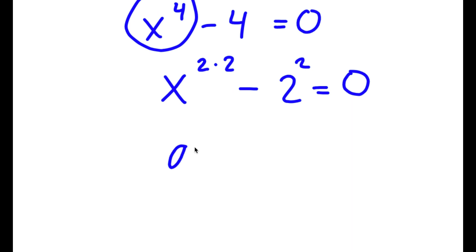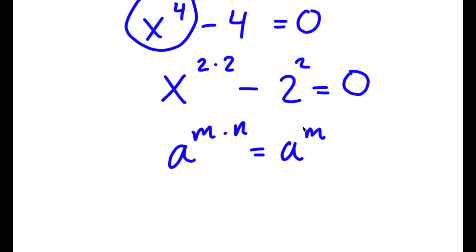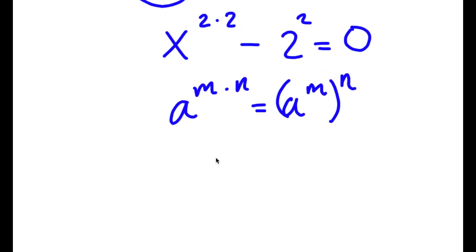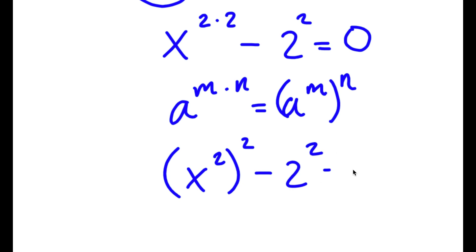Now if I have something in the form a to the power of m times n, this is the same thing as a to the power of m all to the power of n. So x to the power of 2 times 2 I can rewrite as x squared to the power of 2, giving me x squared to the power of 2 minus 2 squared equals 0.